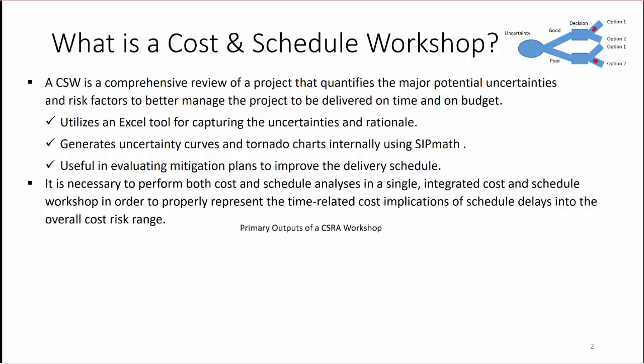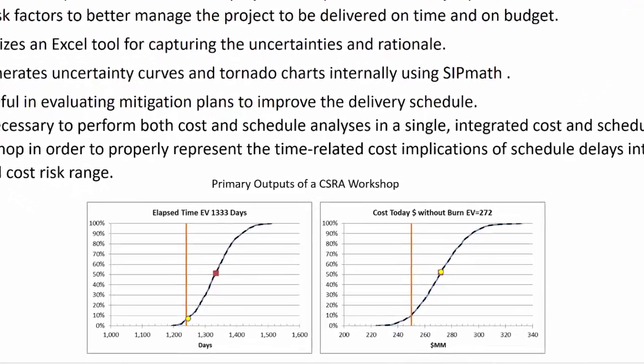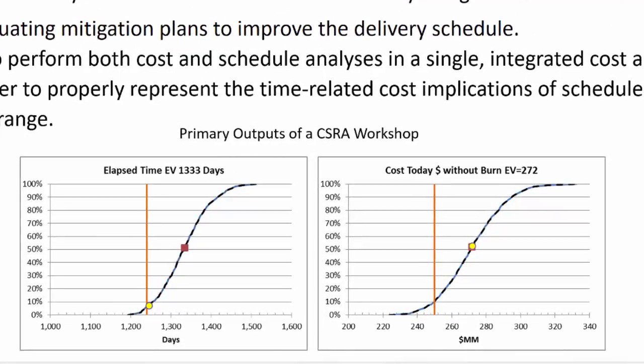So what are the primary outputs of a CSRA workshop? It's these two graphs. The one on the left shows the elapsed time for the project as a cumulative distribution function. The x-axis is in days, and the y-axis is the probability that you will achieve it in those days or less. Where the orange line is, it's saying there's only about 5% to 7% chance that you'll complete the project in less than 1,250 days. What's important about the orange line is that when you've generated a deterministic answer, it's probably down there at the P5 to P10 outcome — not at the red dot, which is the expected value.